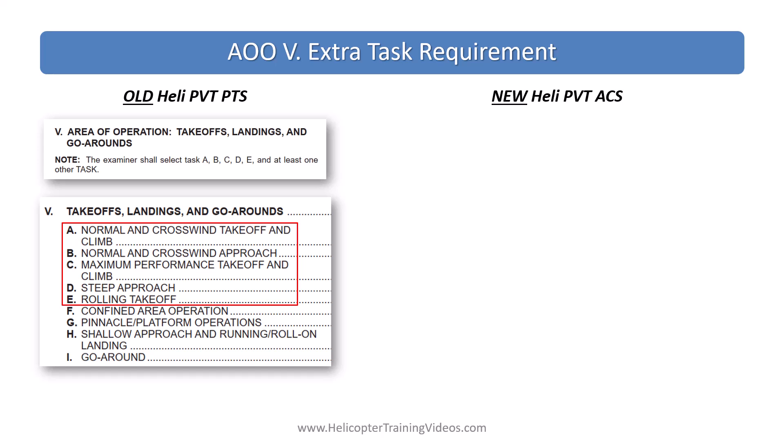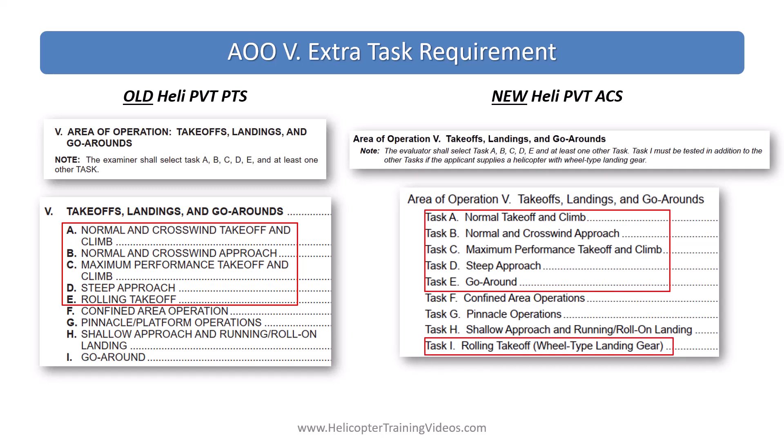Under area of operation five — takeoffs, landings, and go-arounds — on the old PTS the requirement was to do tasks A, B, C, D, E, and at least one other task, meaning a normal takeoff, normal approach, max performance takeoff, steep approach, and rolling takeoff if applicable (i.e., if you had wheels). Under the ACS it is very similar: you still have to do normal takeoff, normal approach, max performance, steep approach, and rolling takeoff if you have wheel-type landing gear, but they've added the go-around task to the requirements, and then you're still required to do one additional task on top of that. This isn't a huge change, because on check rides a go-around may happen anyway due to getting too steep on an approach or traffic, and it's not a particularly hard maneuver.